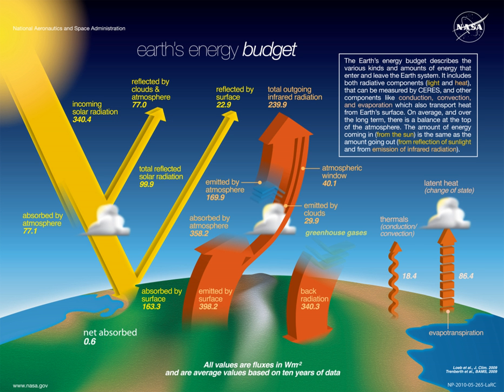Earth's energy budget accounts for the balance between the energy Earth receives from the Sun, and the energy the Earth radiates back into outer space after having been distributed throughout the five components of Earth's climate system and having thus powered the so-called Earth's heat engine. This system is made up of Earth's water, ice, atmosphere, rocky crust, and all living things. Quantifying changes in these amounts is required to accurately model the Earth's climate.